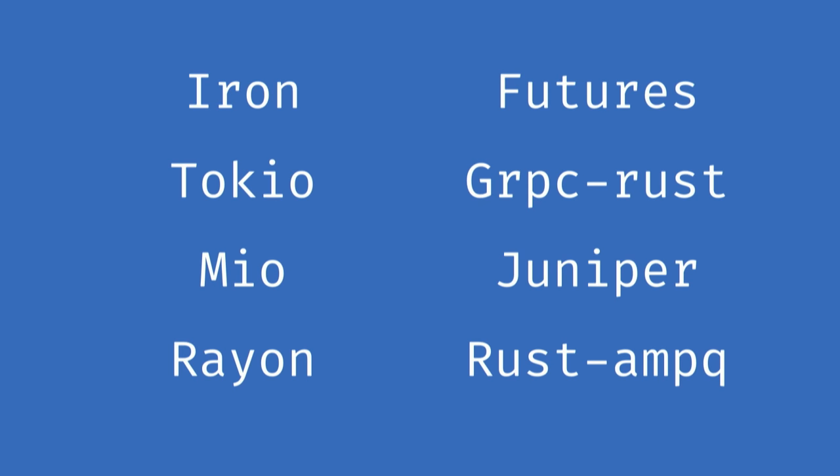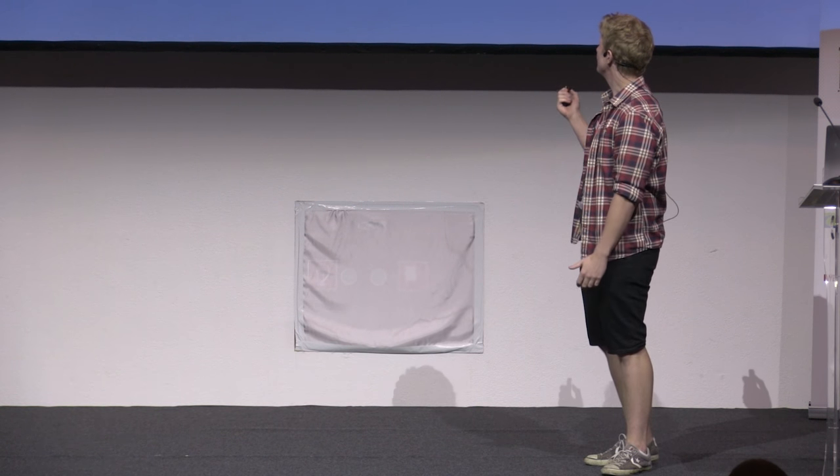There are so many more cool libraries I don't have time to cover. There is Iron, which I talked about briefly. There is Tokyo, which is one of the fastest network libraries out there. Mio, which is a super fast IO framework that enables the performance of both Futures and Rocket. Rayon, which enables you to use MapReduce out of the box with no problem and introduces parallelism to all core types — you can do heavy computational loads quickly. Futures, which I talked about. Juniper, a full GraphQL implementation in Rust. And both gRPC and AMQP are also supported.